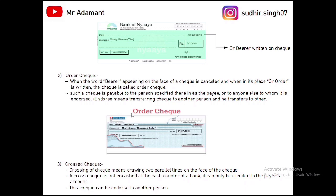For endorsing: if Ankit Sharma wants to transfer the cheque to Suraj Sharma, he has to write the name of Suraj Sharma and sign, so Suraj Sharma now receives the payment. This is called endorsing — transferring the cheque to another person.